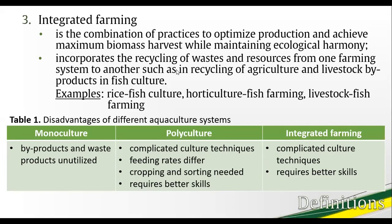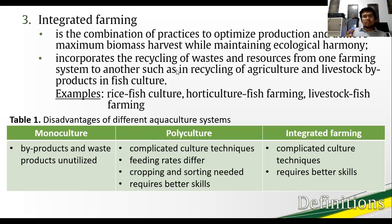In integrated farming, which is a cut above polyculture, the objective is the combination of practices optimizing biomass production of the whole agriculture system while maintaining ecological harmony. Unlike polyculture, the combination in an integrated farming setup involves two or more farming systems — such as rice and fish farming, horticulture and fish farming, and even livestock and fish farming. There are different aquaculture systems because there may be different needs, expertise, and budget of the owner-operator.